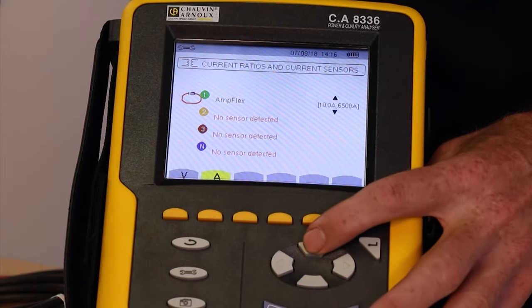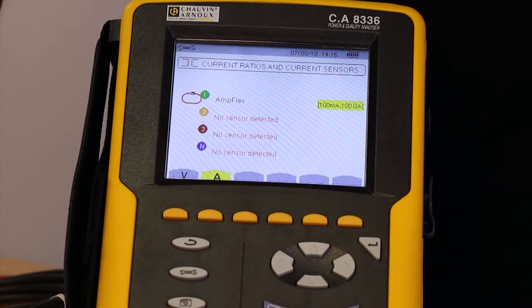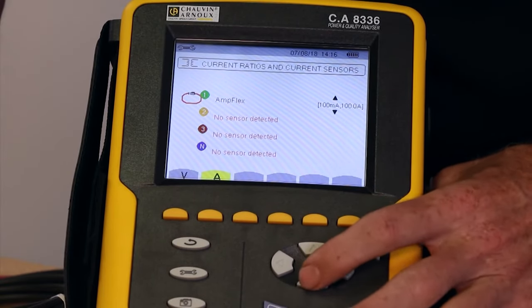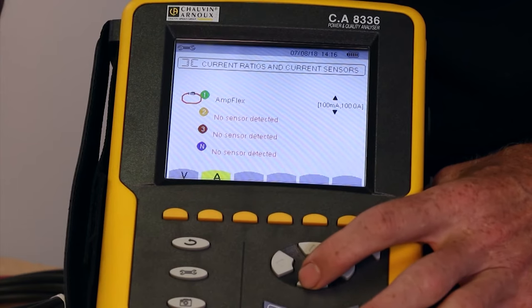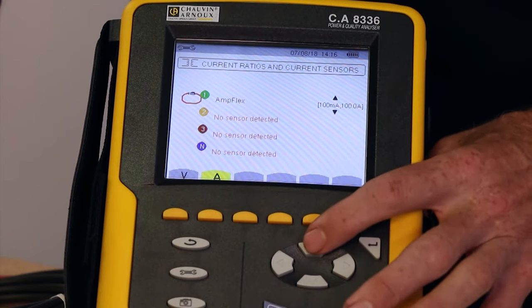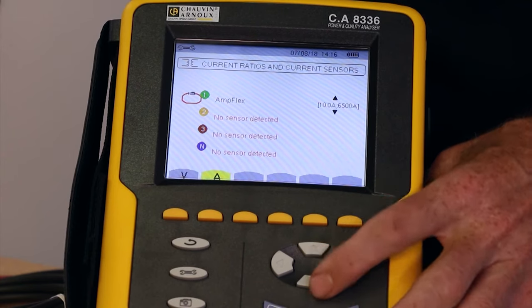While the Qualistar automatically detects what sort of clamp is connected or plugged into it, with some of the clamps, you'll also have the option to change the measurement range. This particular flexi clamp will measure from 100mA to 10,000A, but if you're connecting to an installation which is not going to have more than 100A flowing through it, you should select the 100mA to 100A position. Press the enter key and then the up-down arrows. This will take you to another range. This gives you from 10A to 10,000A or for slightly lower current, the better resolution, you can have between 10.0 and 6,500A.